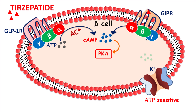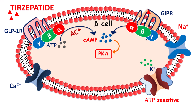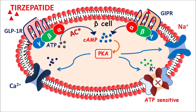Tirzepatide also acts on the GIP receptors, again releasing cyclic AMP. Both receptors increase cyclic AMP levels within the beta cells, promoting the action of Protein Kinase A. Protein Kinase A is a group of phosphorylating enzymes that control different types of ion channels: ATP-sensitive potassium channels, voltage-gated calcium channels, and voltage-gated sodium channels. Protein Kinase A inhibits ATP-sensitive potassium channels, preventing potassium from going outside, while activating voltage-gated calcium channels so calcium enters the beta cells, leading to depolarization and release of insulin. Sodium ions also enter via activated sodium channels, further causing depolarization and insulin release.